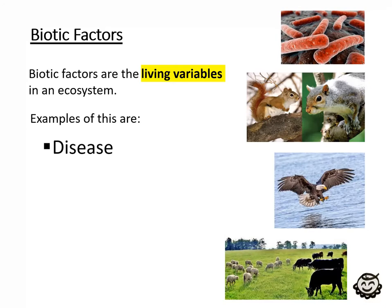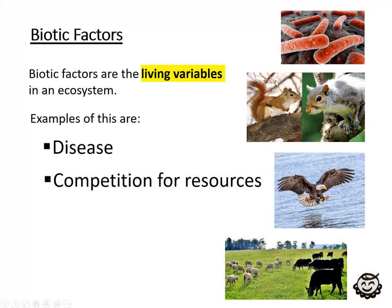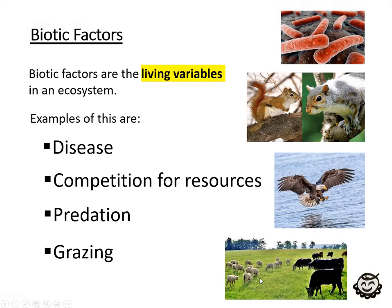Some students consider disease as abiotic, but remember — diseases are generally caused by living things such as bacteria or fungi. You also have competition for resources. There's a picture of two squirrels here — the red squirrel, or Eurasian squirrel, and the grey squirrel. We know these are competing in the UK. The grey squirrel comes from North America and is considered an invasive species. Also predation, grazing, and food availability — these should have been covered in Key Area 1.